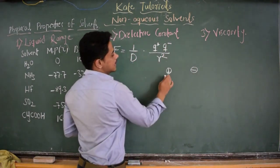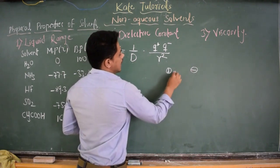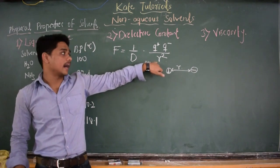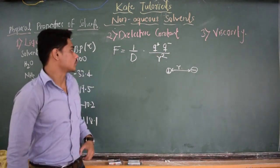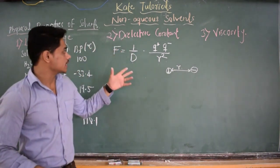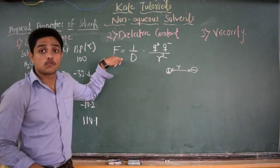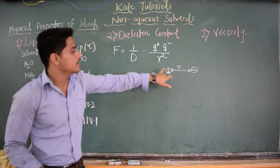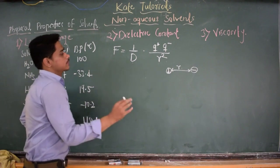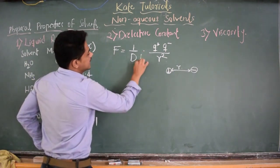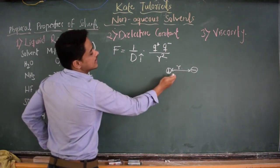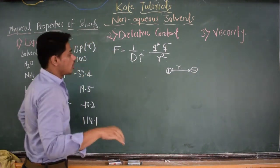Q+ and Q− represent the charges of the cation and anion, and the distance between them is R, which is squared. And D is nothing but the dielectric constant. In this expression, F represents the force of attraction between cation and anion. It is clear that as D, the dielectric constant of the solvent, increases, the force of attraction between cation and anion decreases.